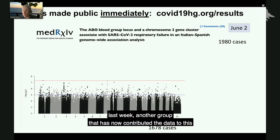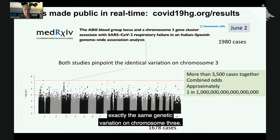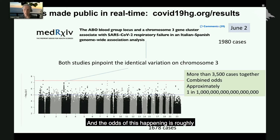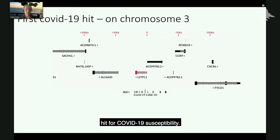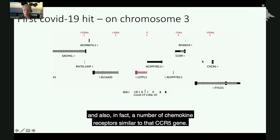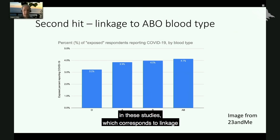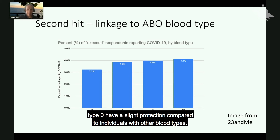What was quite interesting was that another group then described a study with almost 2,000 cases and has now contributed that data to this initiative. These two studies pinpointed exactly the same genetic variation on chromosome 3, and the odds of this happening by chance is roughly 1 in 1 million million million to 1. As a result, we conclude that we have already identified the first hit for COVID-19 susceptibility — in a very interesting region of chromosome 3 that involves both a gene which is a partner to ACE2, the receptor for SARS-CoV-2 infection, and also a number of chemokine receptors similar to CCR5. There is also a second hit corresponding to ABO blood type, in which individuals with type O have a slight protection compared to individuals with other blood types.